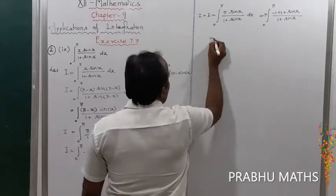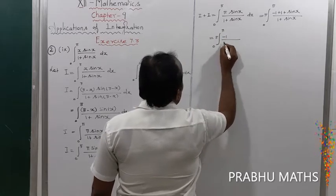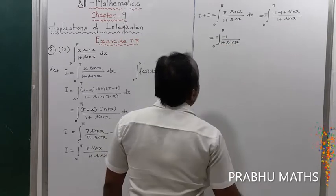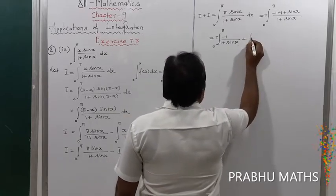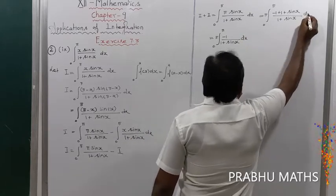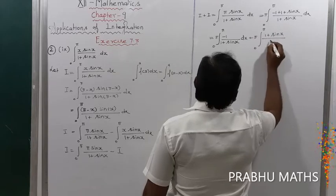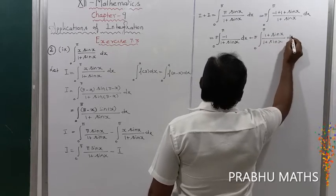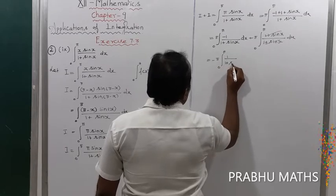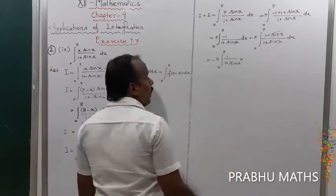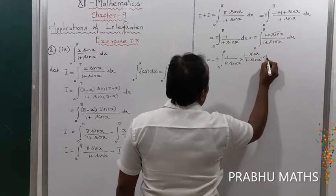This simplifies to 2I equals π times integral from 0 to π of [1 minus 1 divided by (1 plus sin x)] dx. This splits into π times integral of dx minus π times integral from 0 to π of 1 divided by (1 plus sin x) dx. For the second integral, multiply numerator and denominator by the conjugate (1 minus sin x) divided by (1 minus sin x).